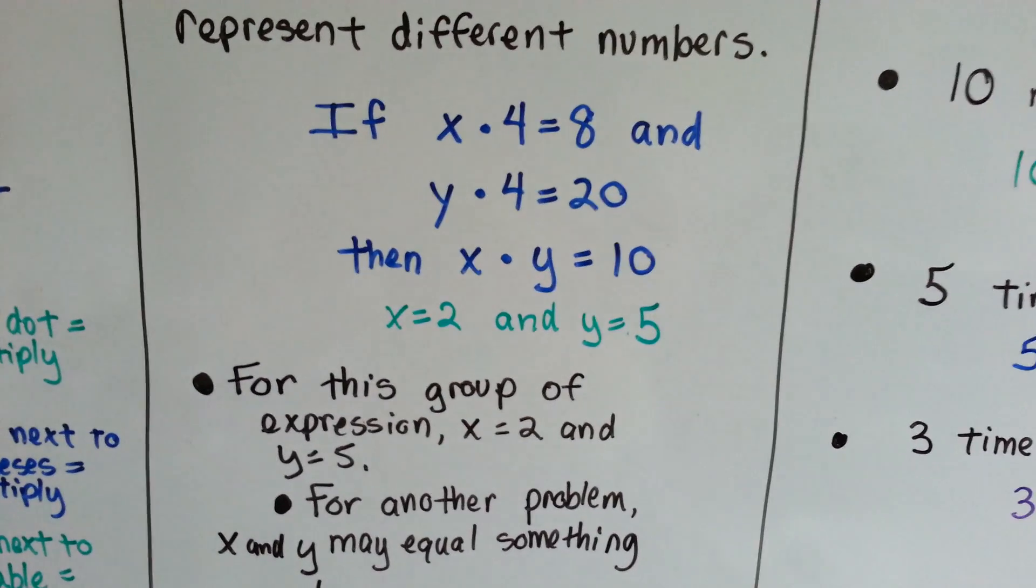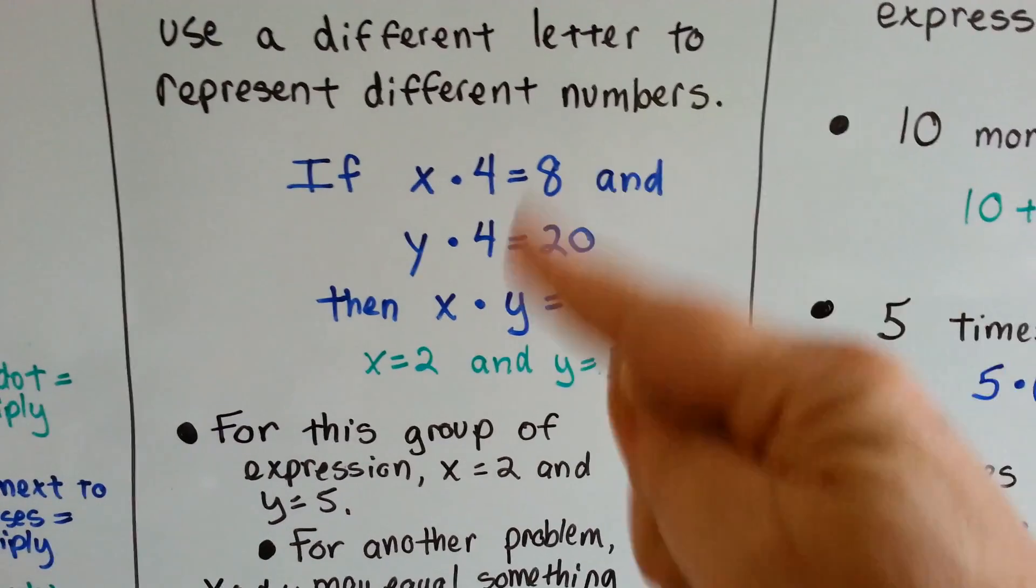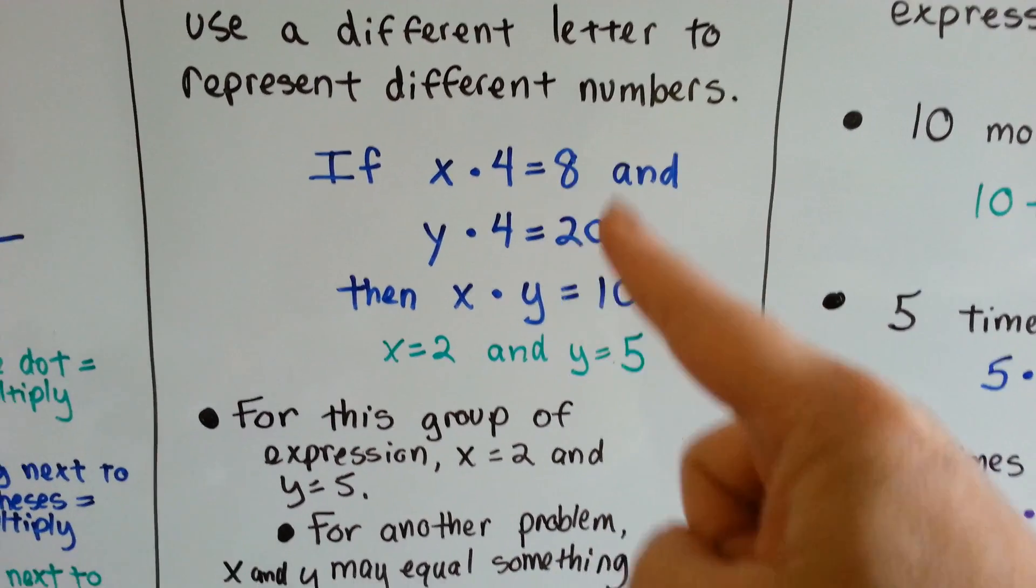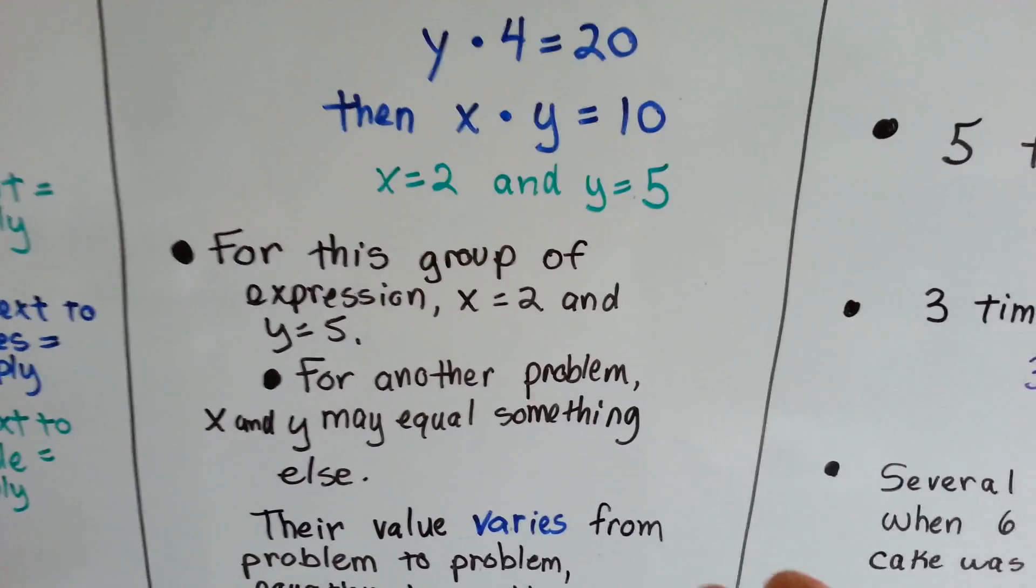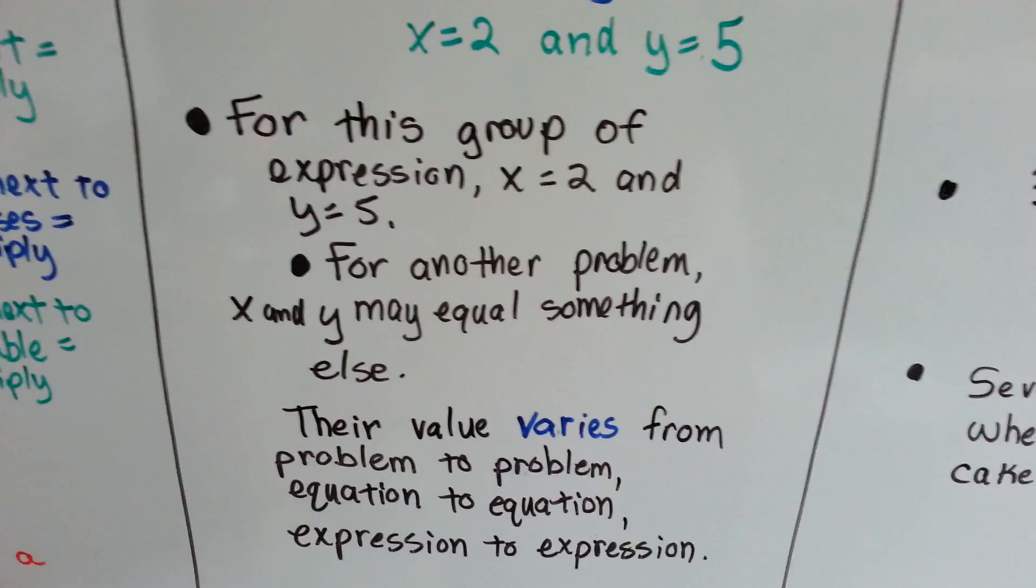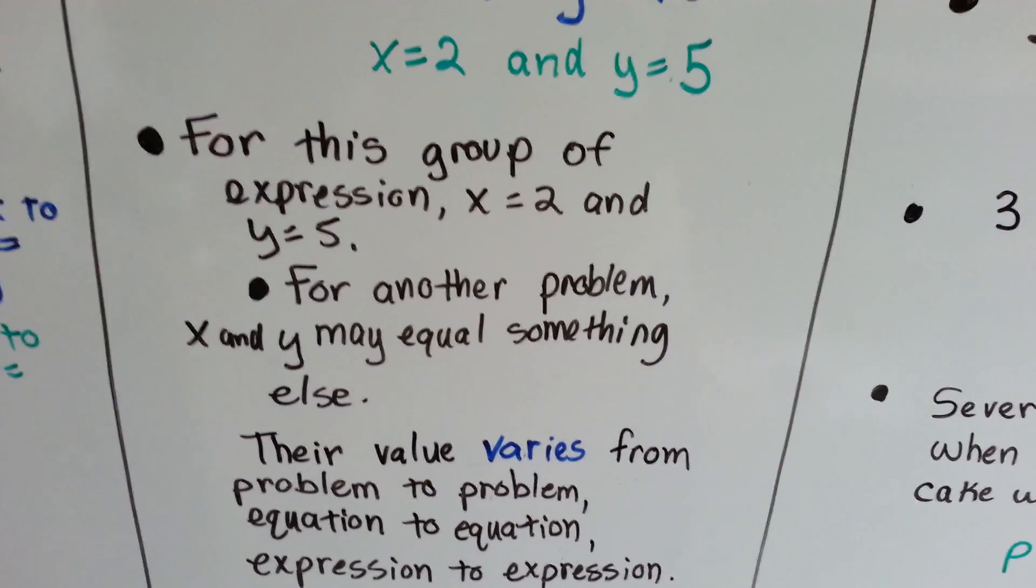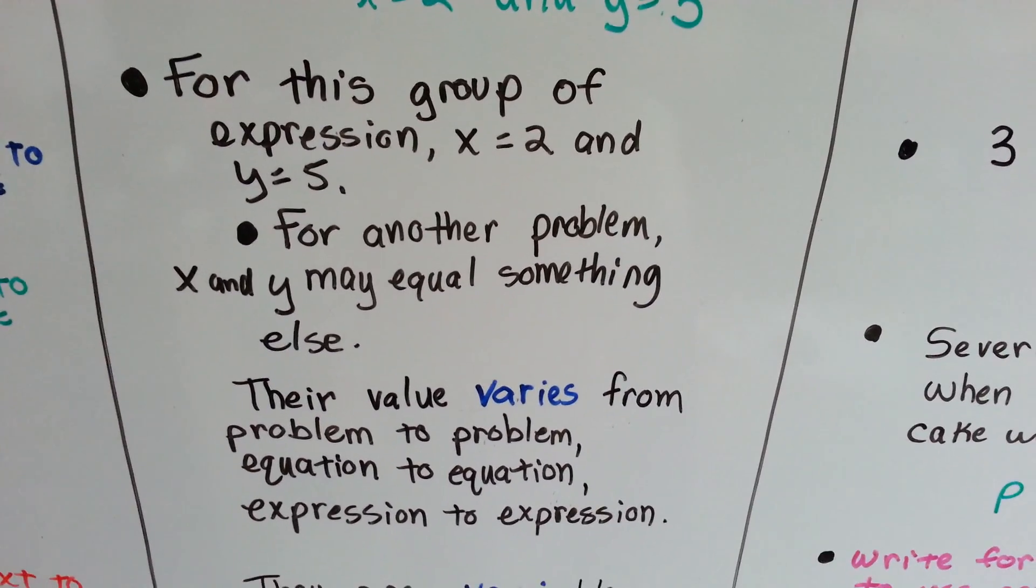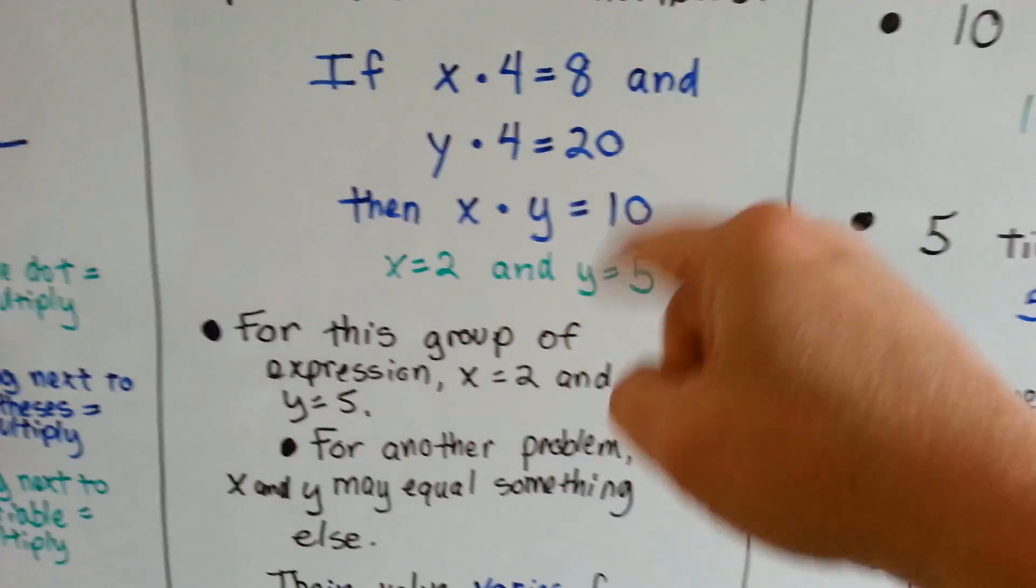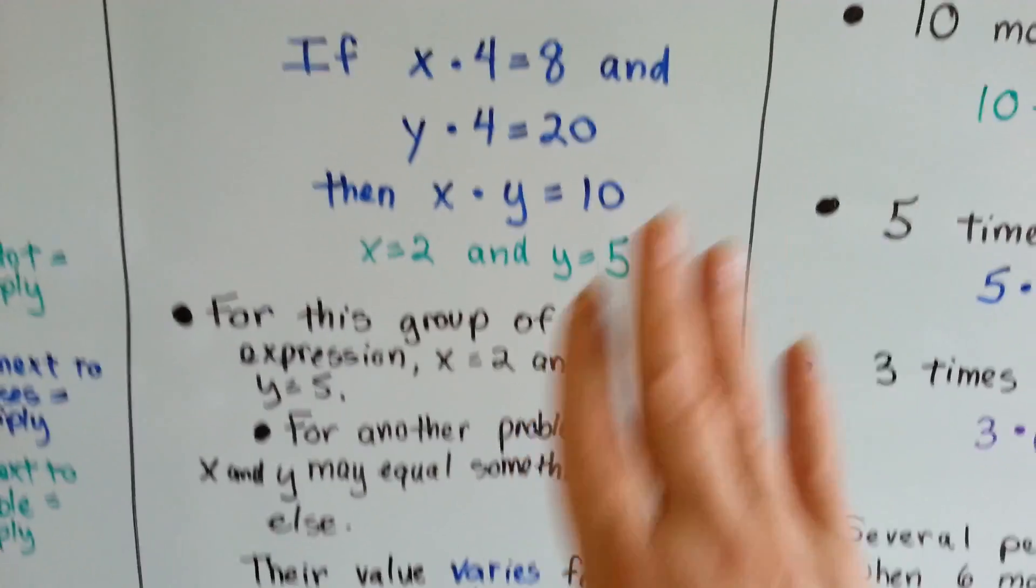Well, for this group of expression, this group right here, the x equals 2 and the y equals 5. For another problem, the x and y may equal something else. For the very next problem, x could be 5 and y could be 2. You never know. It goes from problem to problem. So they always change. So don't think forever that x is going to be 2. It varies.